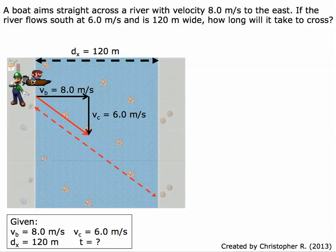The distance the boat actually travels from the viewpoint of someone on shore, which is Luigi here, is the red dashed line right here. Notice that it is parallel to the red vector resultant.